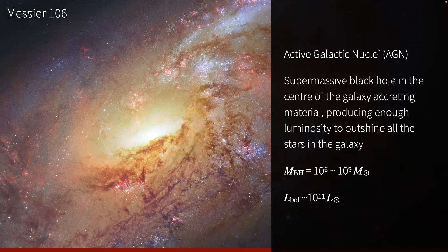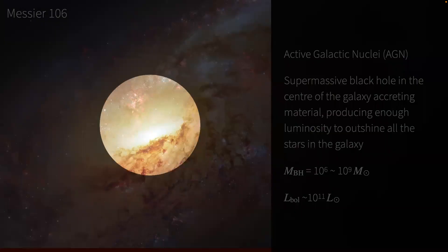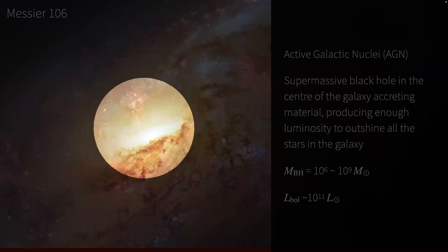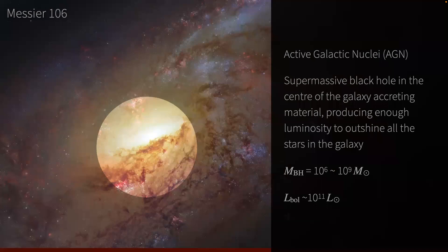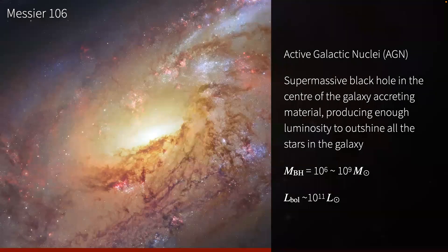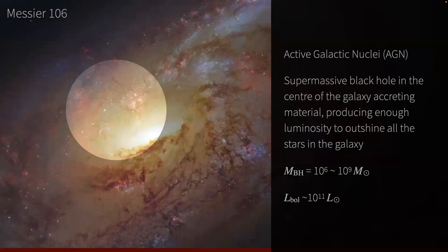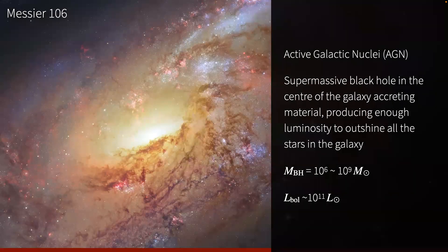Typically, the supermassive black hole in the centre of a major galaxy will be somewhere between a million and a billion solar masses. As we can see in this picture, this is a spiral galaxy called Messier 106. The whole of this galaxy is producing a light source bright enough to outshine all of the stars in that galaxy — something like a luminosity of 10 to the 11 times the solar luminosity, coming out of a volume of space around the size of a solar system.